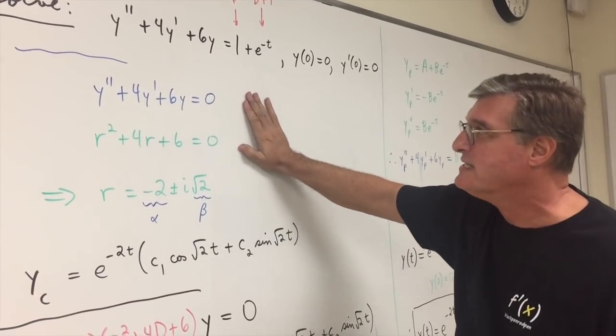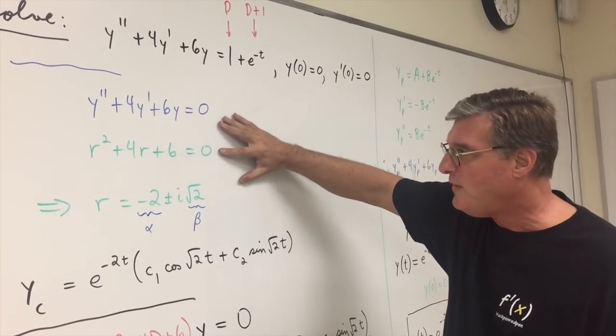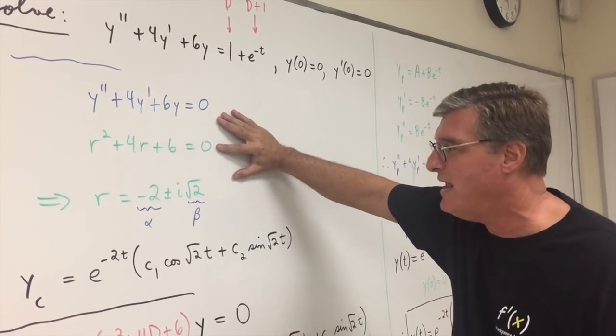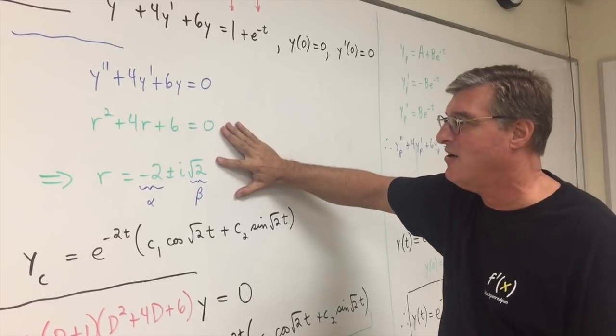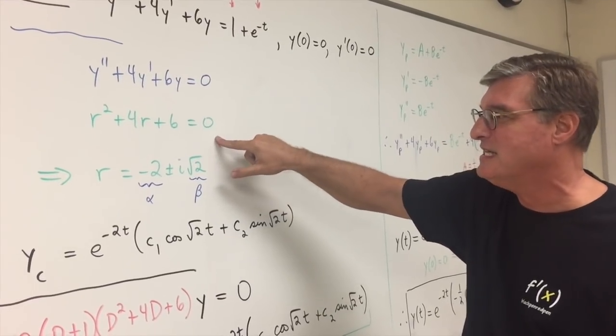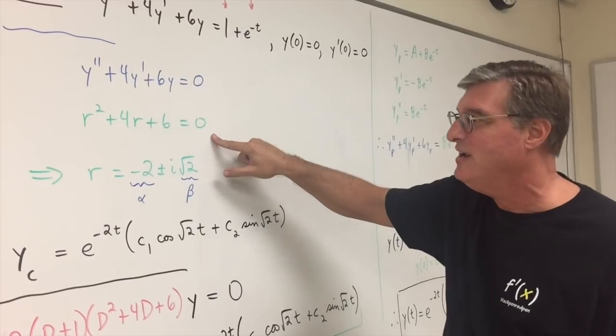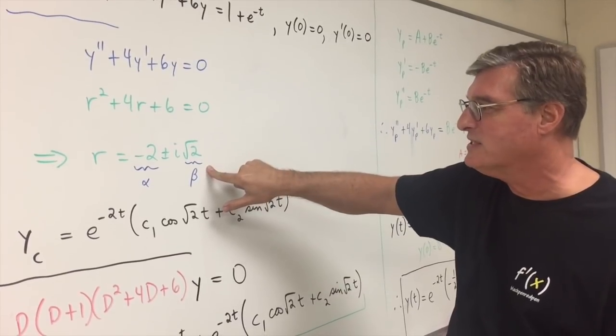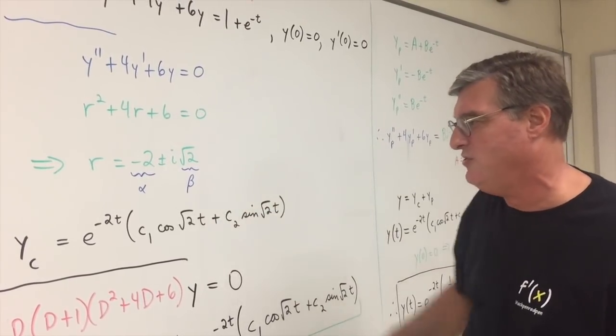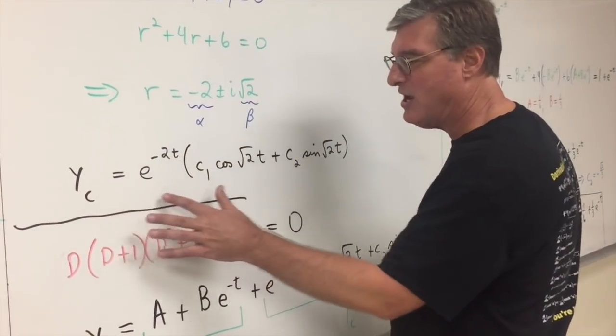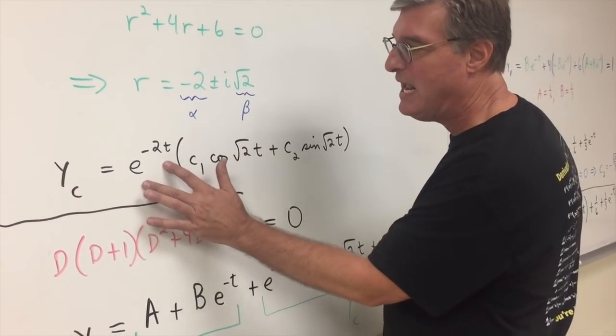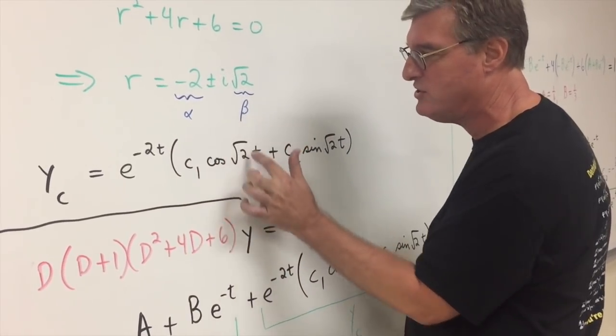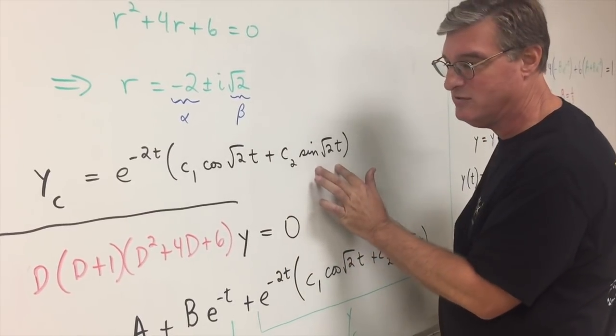Now, remember how you do this. Pretend like it's homogeneous. Solve the characteristic equation, and then build what we call your complementary function from the characteristic equation. So, you know, you should get this nice quadratic. It does not factor. Use the quadratic formula. You get these complex conjugate roots. r is equal to negative 2 plus or minus i square root of 2. So now, that means that your complementary function is going to have this form: e to the minus 2t times parentheses c1 cosine root 2t plus c2 sine root 2t.